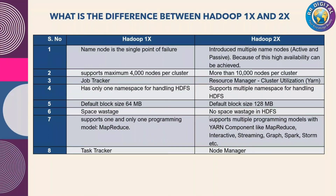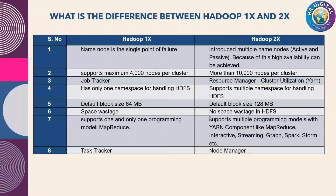Coming to the second point: Hadoop 1x supports a maximum of 4000 nodes per cluster — that is the max limit in a data center at a time. In 2x we can configure more than 10,000 nodes per cluster. Coming to the third point: Hadoop 1x has a JobTracker, but in 2x they renamed it as ResourceManager, and all cluster utilization is handled by the YARN architecture.